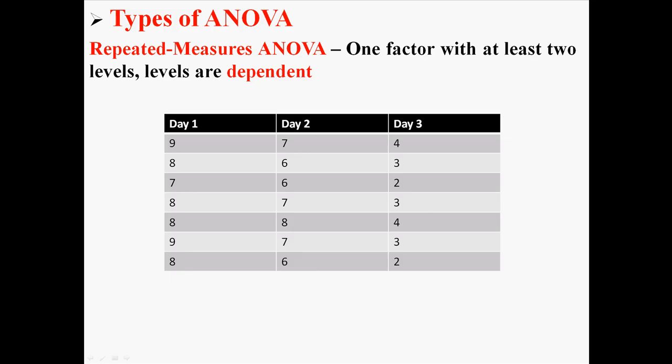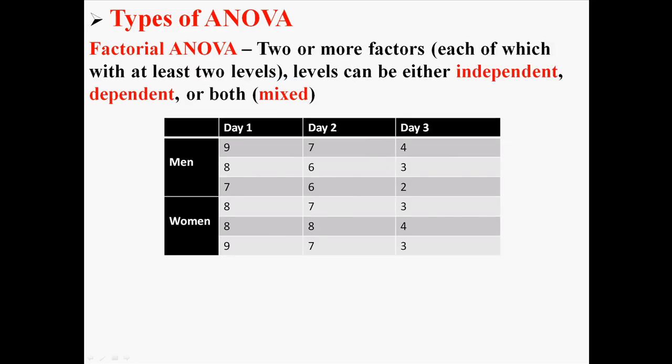So make sure you know the difference between independent data and dependent data. I actually have a separate lecture on that if you want to check that out. There's also a factorial ANOVA. Now a factorial ANOVA has two or more factors, and each of those factors have at least two levels.